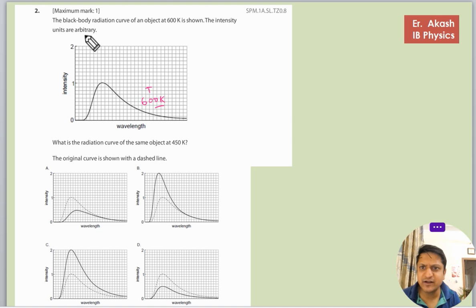The intensity units are arbitrary. Some intensity is there. What is the radiation curve for the same object at 450 Kelvin? So the temperature is less than 600. The original curve is shown with the dashed line.